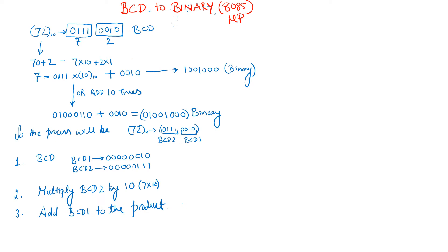Hello friends. In this video we will learn how to convert BCD to binary in the 8085 microprocessor. Suppose we want to convert the number 72, which is a decimal number. Decimal can be directly written into BCD: 0111 0010 is the BCD representation of 72.